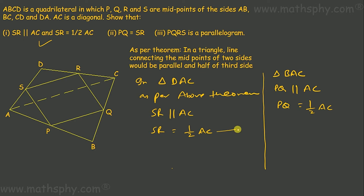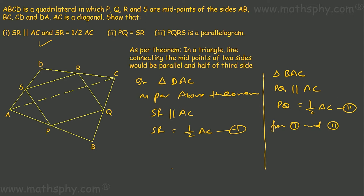I take the SR result as equation 1 and the PQ result as equation 2. From equations 1 and 2: SR is equal to half of AC, and PQ is also equal to half of AC. So from 1 and 2, we can say PQ equals SR. Done.